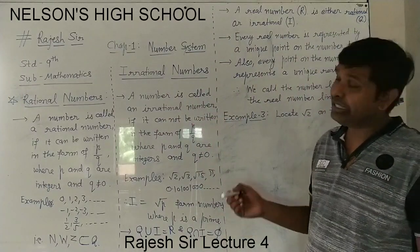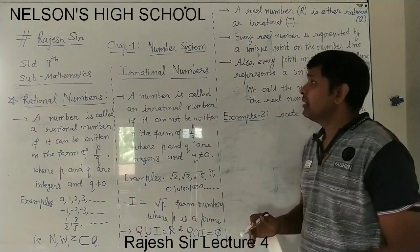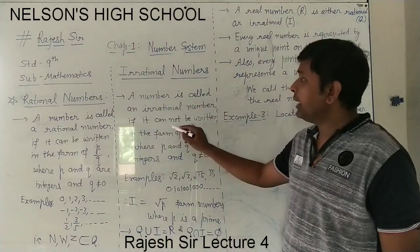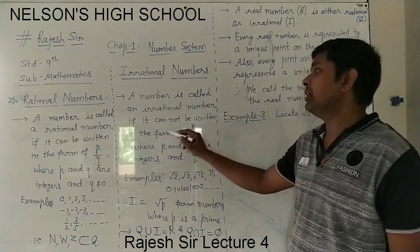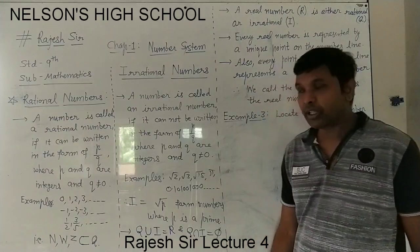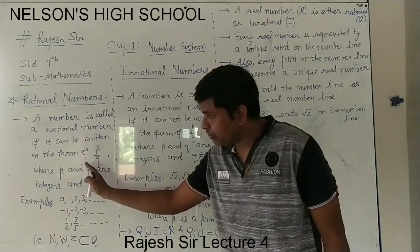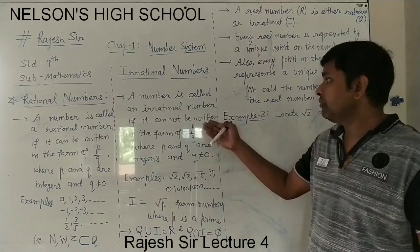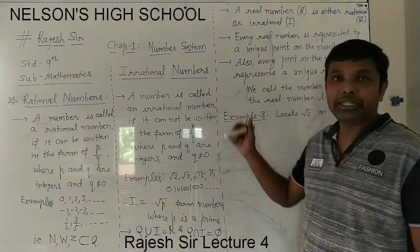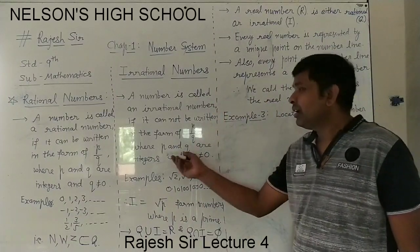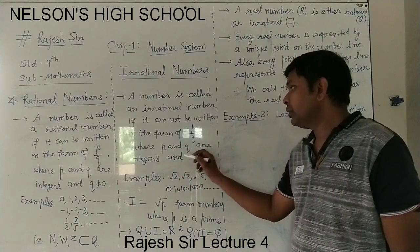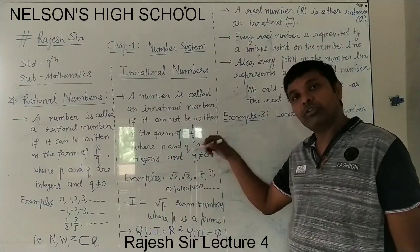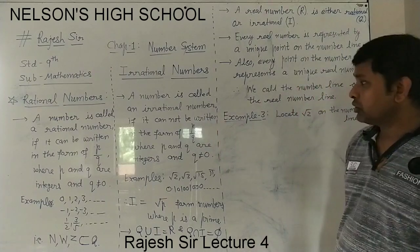A number is an irrational number if it cannot be written in the form of p upon q. If it is in p upon q form, it will be rational. If you cannot write it in the form of p upon q — with the same conditions where p and q are integers and q not equal to 0 — then it will be an irrational number.